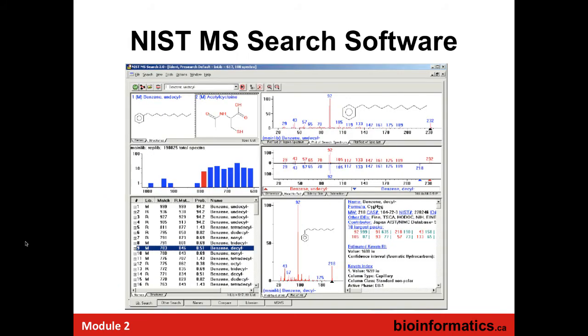The NIST database also has ion trap MS, QTOF, and triple quad MS data. For MS-MS spectra they produce consensus spectra rather than individual energies. They have lots of retention indices for about 80,000 compounds. It's a vast and quite affordable resource, though it has some limitations.